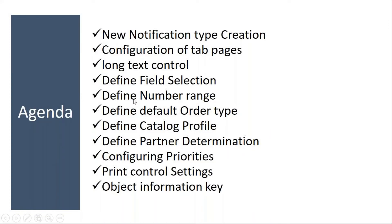We'll be starting our next topic: notification configuration, which is basically customization of notifications. The topics we are going to cover include how to create a new notification type, configuration of the tab pages, how to configure the tab pages of the notification, long text control, then defining the field selection — which fields have to be mandatory, which fields have to be in display mode. Then defining the number ranges.